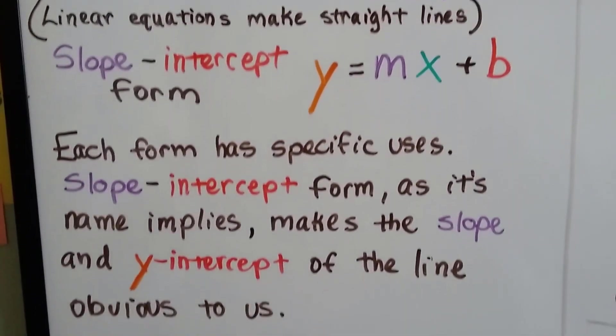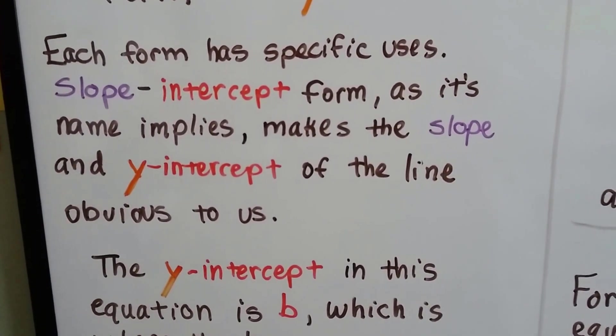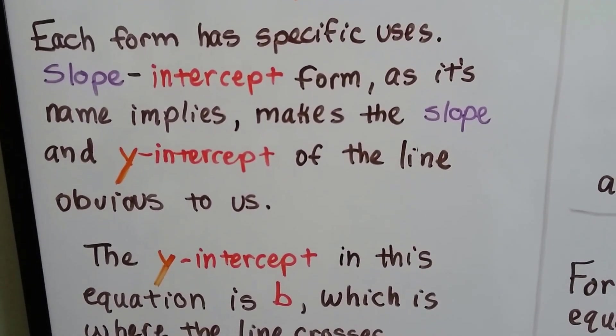So each form of equation has specific uses. And the slope-intercept form, as its name implies, makes the slope and y-intercept of the line obvious to us.